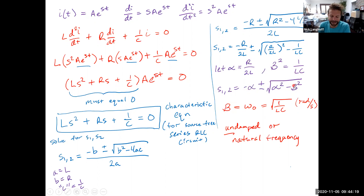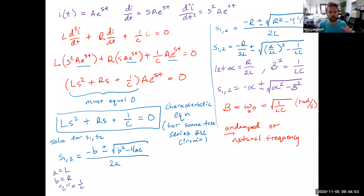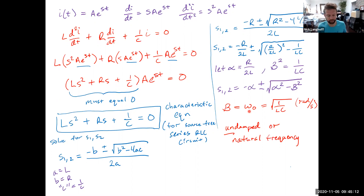Beta has special significance: it's the square root of 1/LC, with units of radians per second. This is the undamped or natural frequency of the system — the frequency at which it would oscillate if no energy were lost. Analogously, a mass bouncing on a spring that never loses energy would oscillate forever at rate omega-naught, or beta. Similarly, an LC circuit with no resistive dissipative element would oscillate at rate omega-naught.